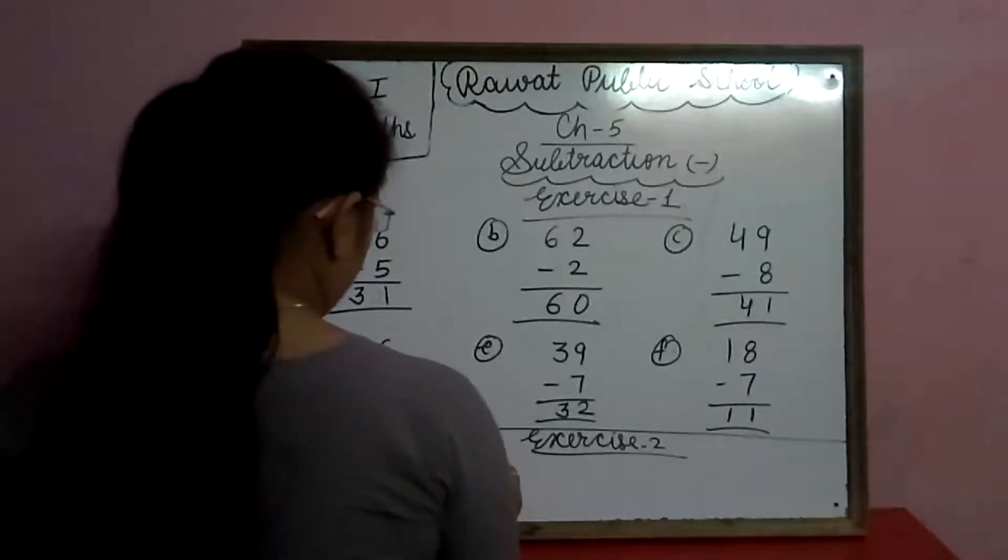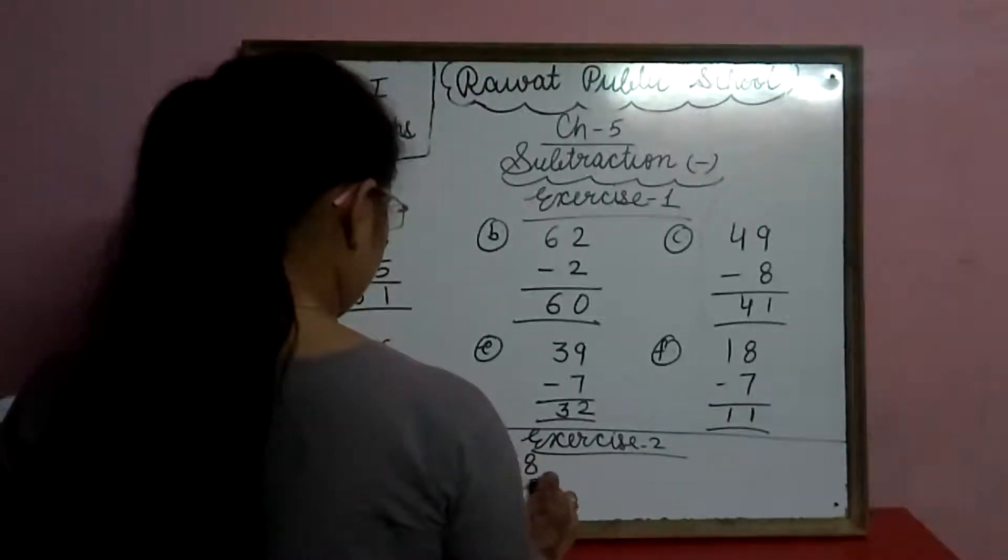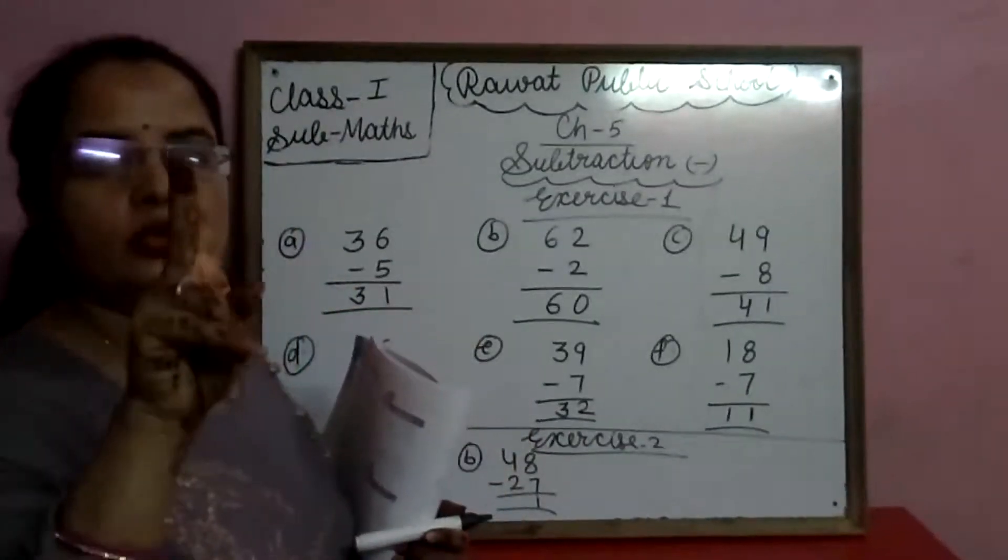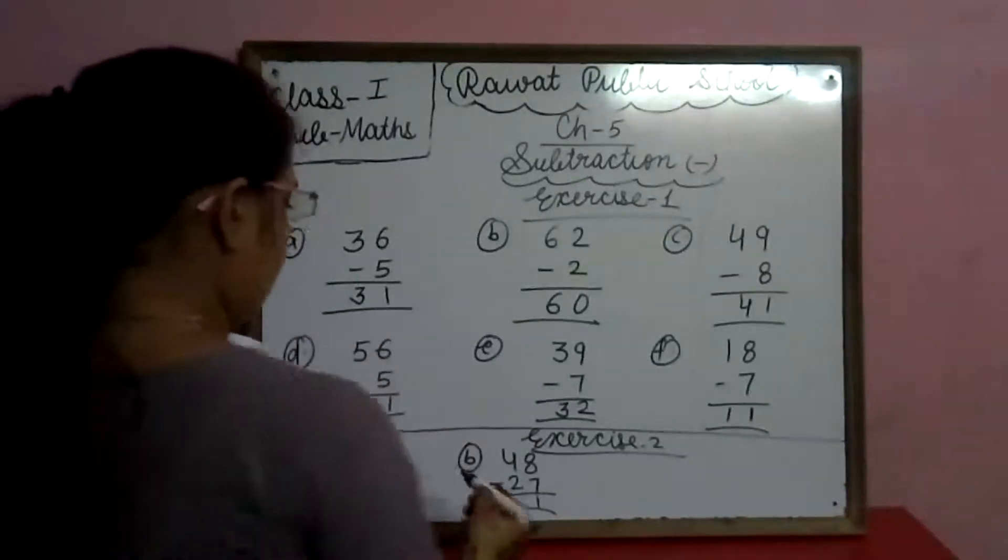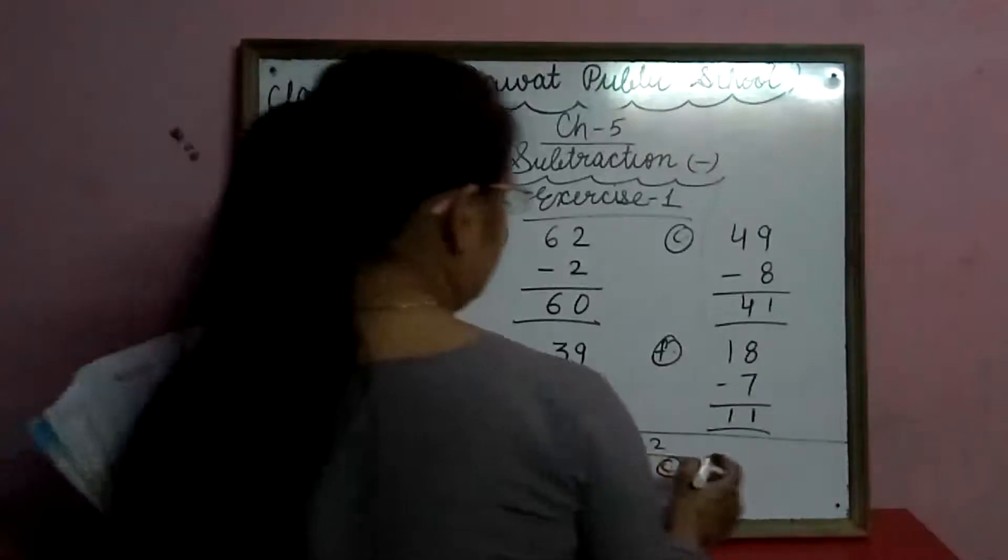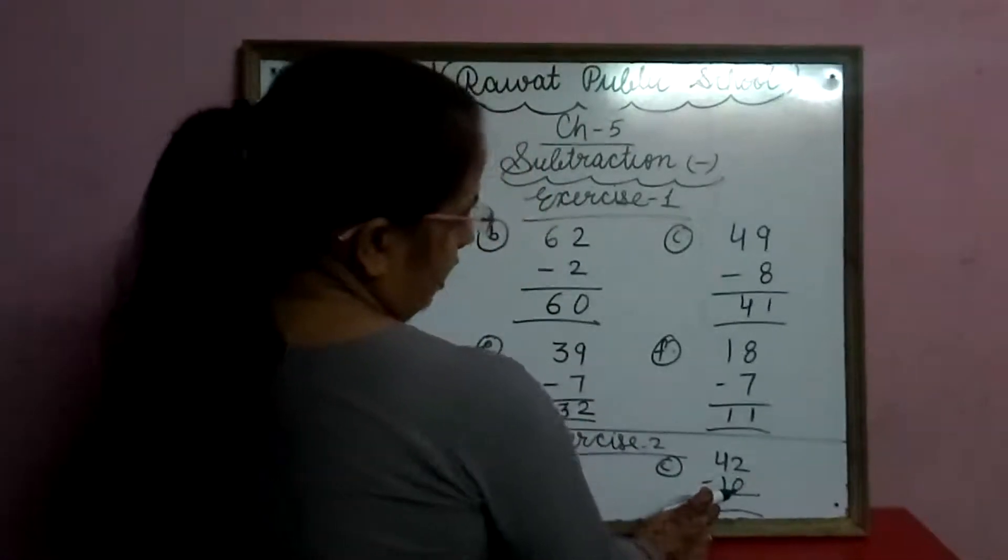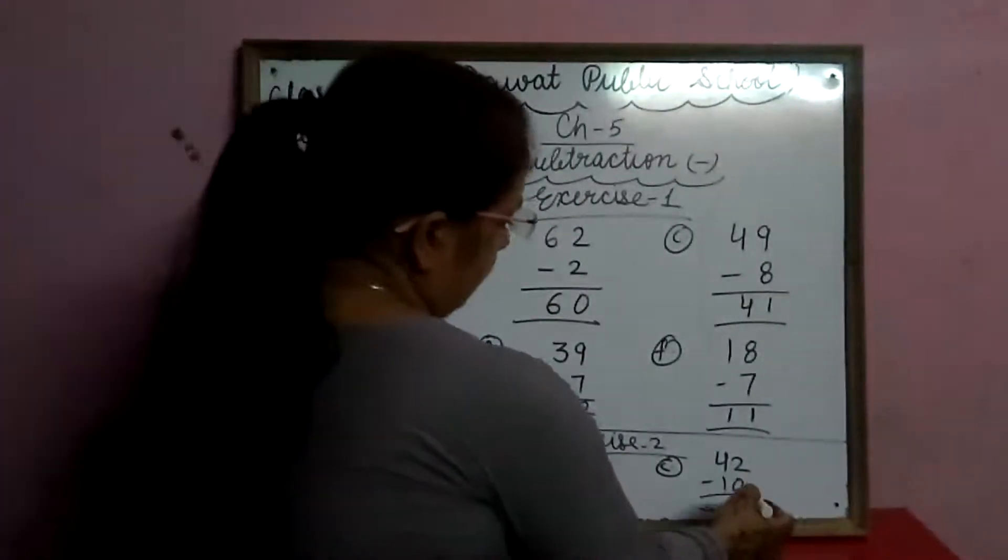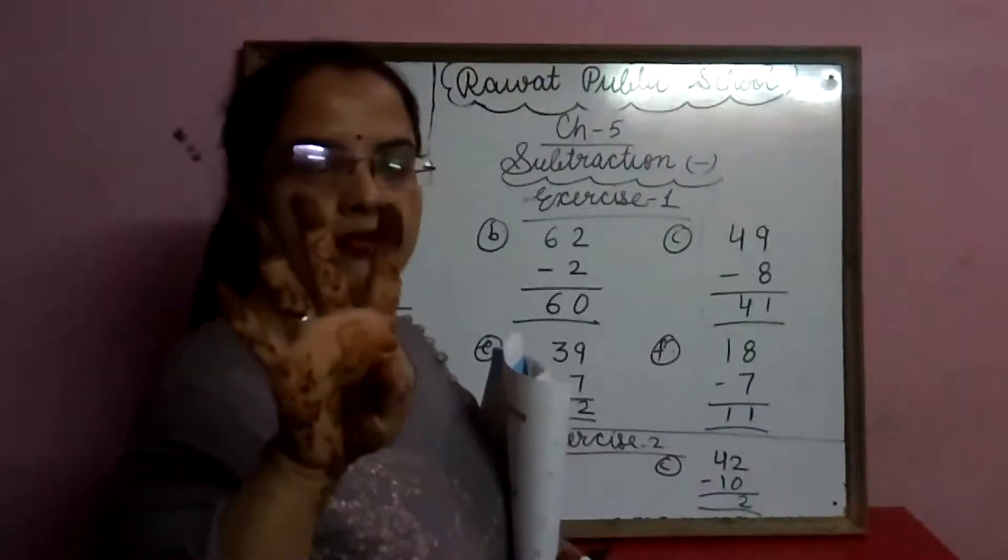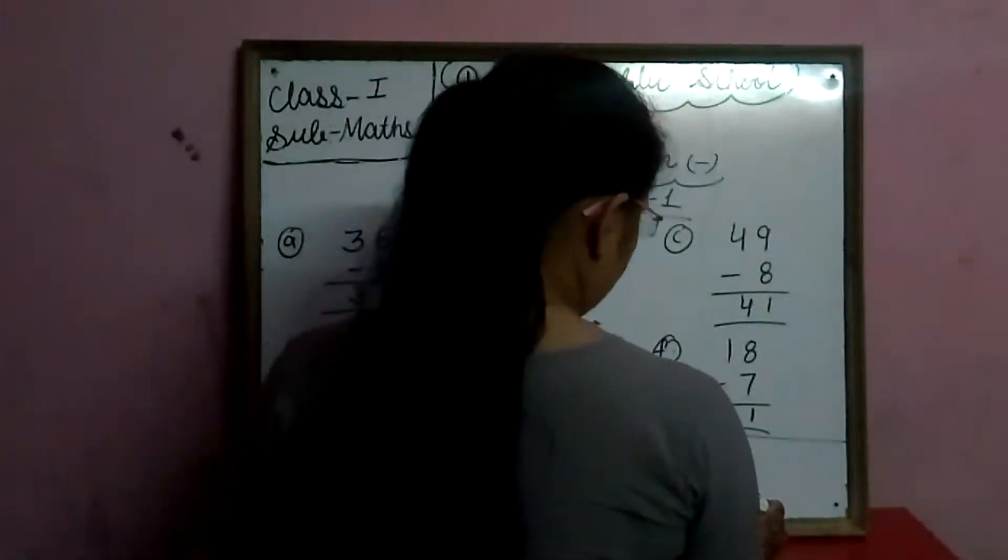B. 42 minus 12. 4 mei se 2 cut karengi. 4 mei se 1 cut karengi. How many fingers are left? 3 fingers. So we will write here 3.